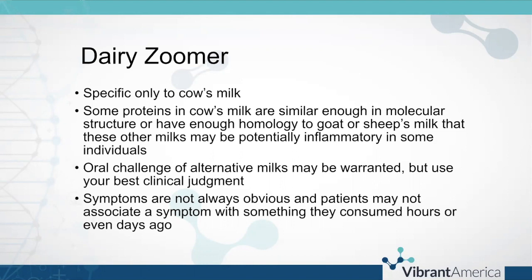There's not often enough structural difference in some of these peptides between cow, goat, and sheep species for there to be enough difference in the antibodies produced. An oral challenge of alternative milks might be warranted, but use your best clinical judgment. This would not be a food to trial in the early stages of healing — you would want to do an oral challenge only after an initial elimination period, with confirmation that the intestinal barrier is healed. An oral challenge means having the individual try a small amount of goat milk over three to five days, keeping a detailed food and symptom record.